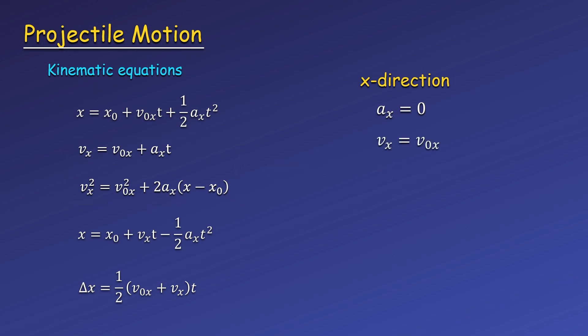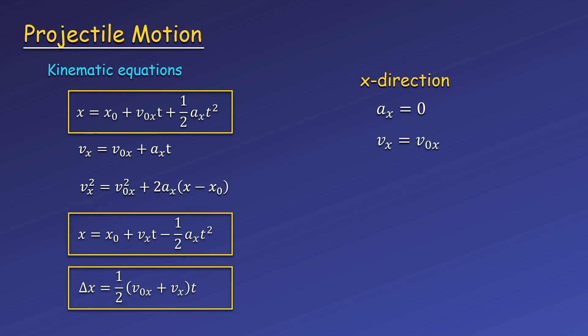Looking at the other equations, and keeping in mind that vx and v-naught-x are interchangeable since they're equal, we can find the displacement in x is equal to the x component of velocity times time. Here I've combined x minus x-naught into delta x, or the displacement. This shows that we only really get one equation that we can use to find information about the horizontal motion.